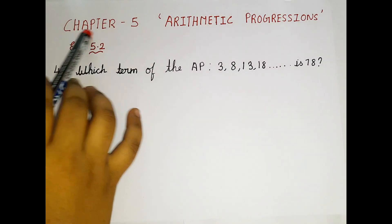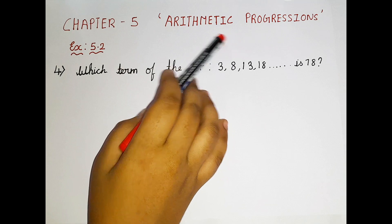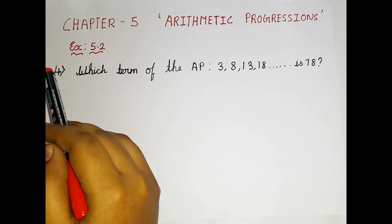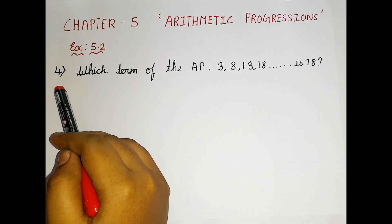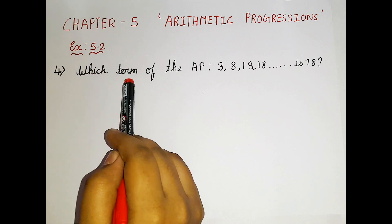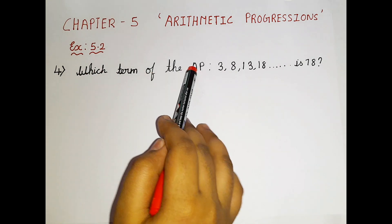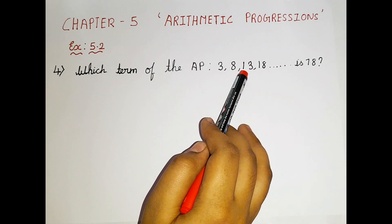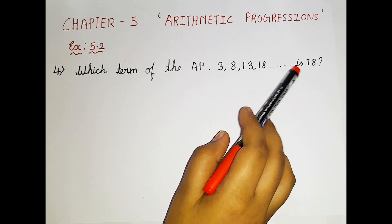Today we are going to be learning Chapter 5, Arithmetic Progressions, Exercise 5.2, 4th question. Alright, now let's read the question. Which term of the AP: 3, 8, 13, 18 is 78?